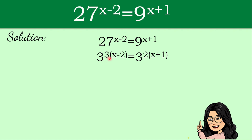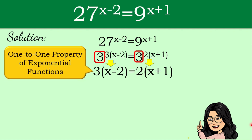Copying the exponents, we have 3 raised to the power of 3 multiplied by the exponent x minus 2, equal to 3 squared multiplied by the exponent x plus 1. They now have the same base. Using the one-to-one property of exponential functions, we can say that 3 multiplied by the quantity x minus 2 is equal to 2 multiplied by the quantity x plus 1. Distributing, we get 3x minus 6 on the left side and 2x plus 2 on the right side.